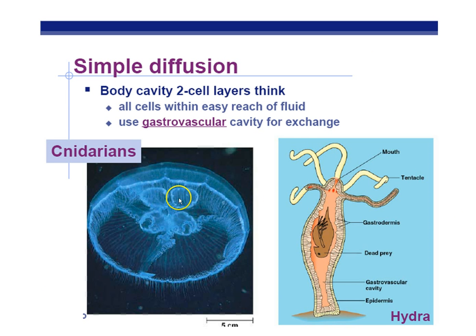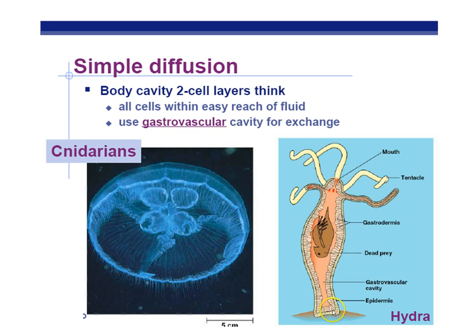Simple animals like jellyfish (cnidarians) don't have a circulatory system — they rely on simple diffusion. Once prey is broken down, materials only have to diffuse from high to low concentration across a cell's thickness. There's no advantage to a circulatory system if cells are right next to the food. Most animals, however, have a more complicated system of pumps and tubes — arteries, veins, and capillaries — unlike plants which use xylem and phloem.